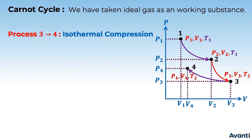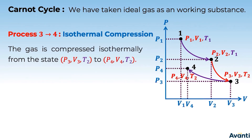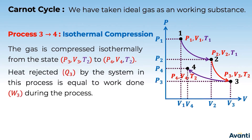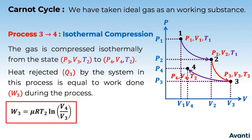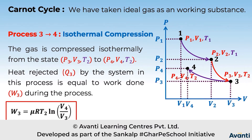The temperature remains the same because it is an isothermal process, so the system goes from P3, V3, T2 to P4, V4, T2 — T2 remains the same at states 3 and 4. Heat rejected equals work done here because it is an isothermal process and ΔU = 0. The work done is μRT2 ln(V4/V3).